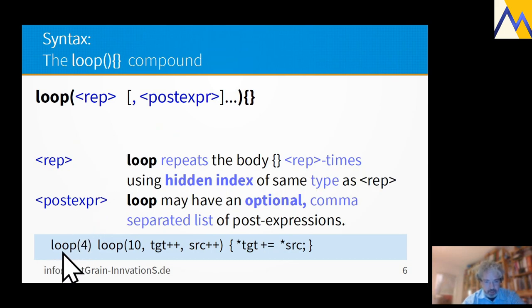So this example I just showed you before might look like this: loop(4), loop(10), comma, and then follows the numbers of post expressions.